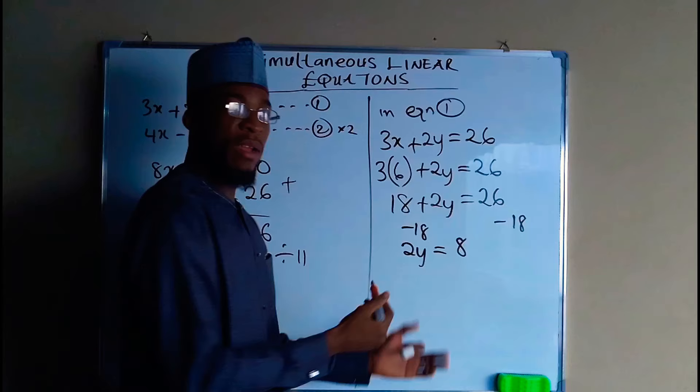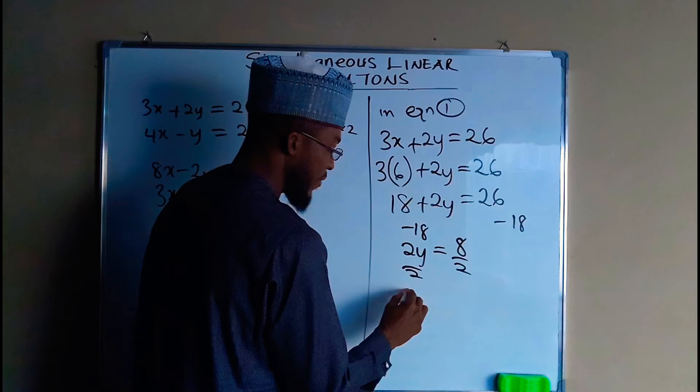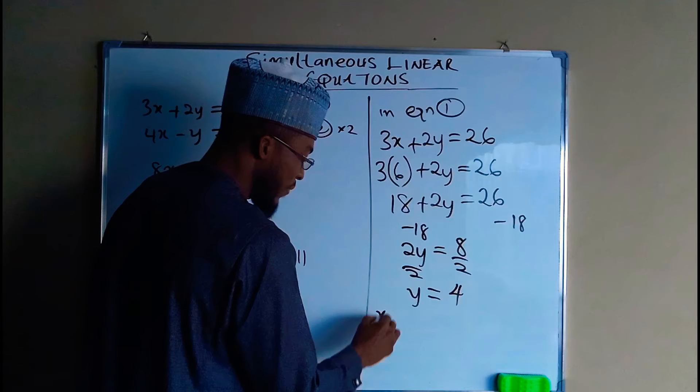If you divide both sides by 2, you end up having the value of y to be equal to 4. So now the values of x and y are x is equal to 6 while y is equal to 4.